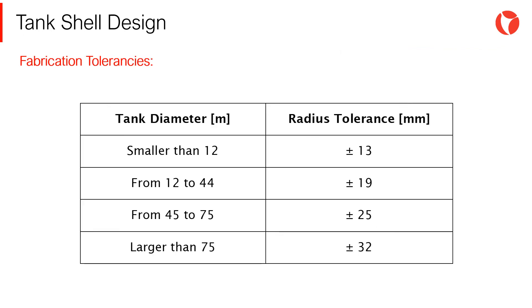In this same line, for the cylindrical deviation of the tank, the code establishes the tolerances shown on the screen, in diameter and radius.